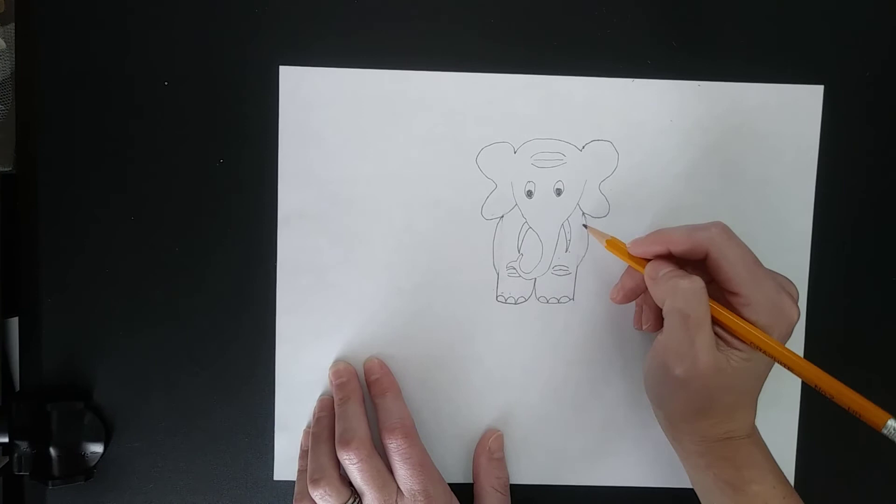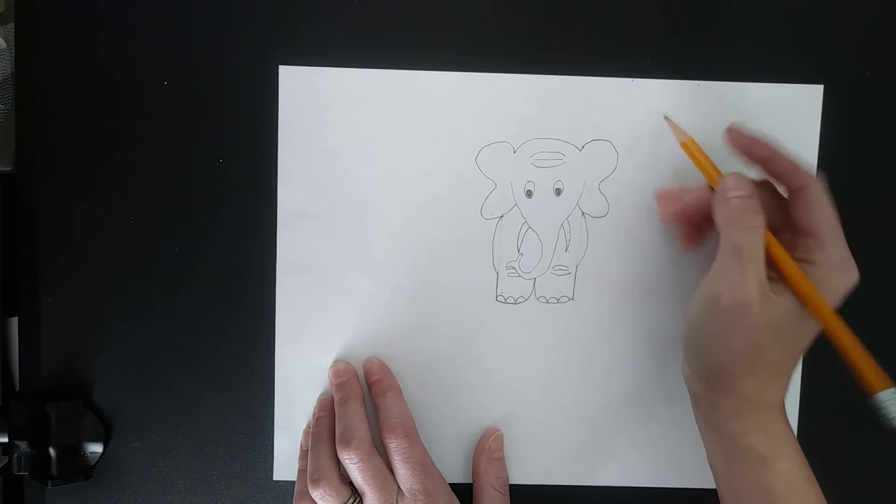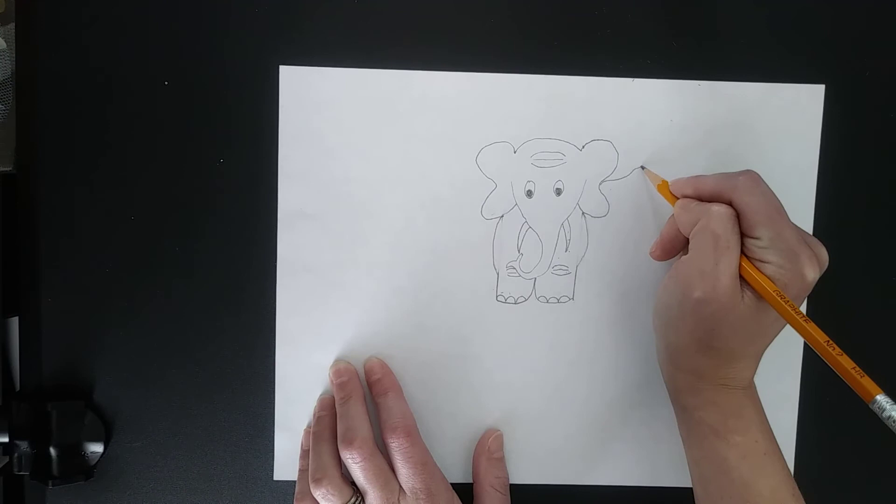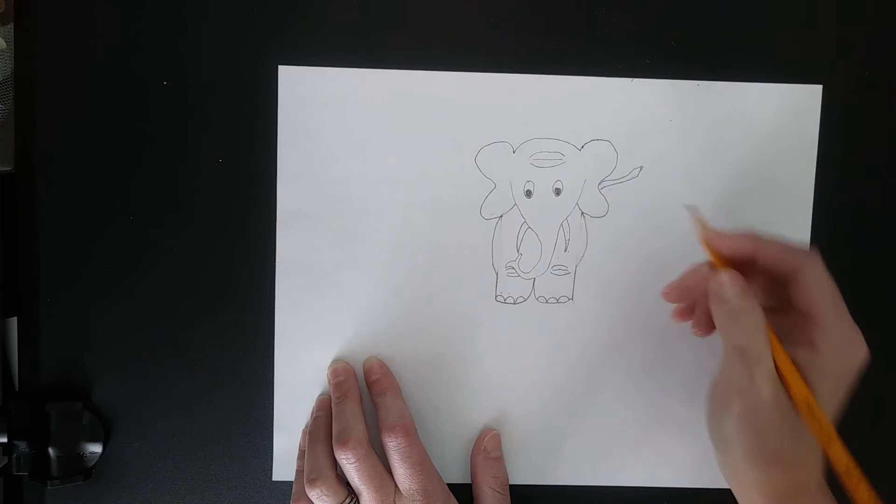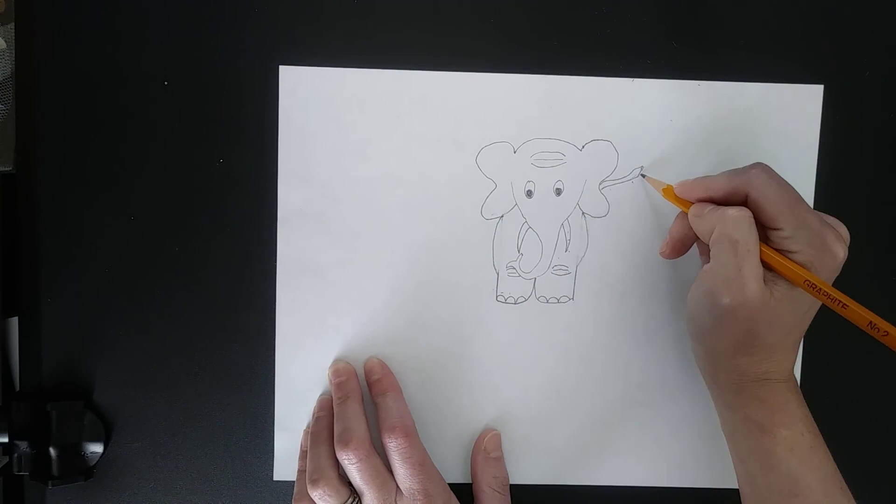And the last little detail that we need is a tail. So I'm imagining my elephant's body goes back. I'm imagining that my elephant's tail will stick out just about there on the side. And they have pretty skinny tails. They're not very wide. Their tails act kind of like a whip or like a fly swatter that they use to swat flies off of their bodies. So it's very skinny and whip-like. It can move very quickly.